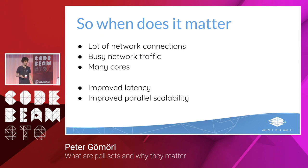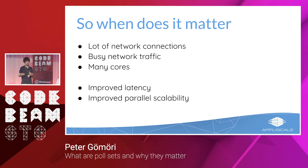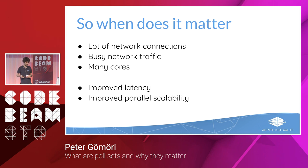To sum up: when does it matter that IO handling was improved in OTP 21? If your application has a lot of network connections — especially long-running ones — or a lot of busy network traffic, and maybe many cores so that concurrency also matters, then you can expect improved latency and improved parallel scalability. On the other hand, if you have a lot of file operations, or mostly message passing or heavy computation, this IO handling framework improvement won't affect those.